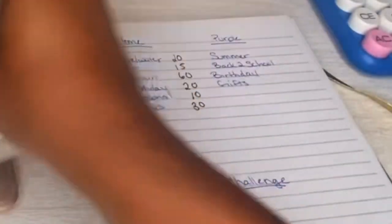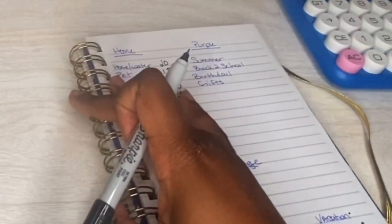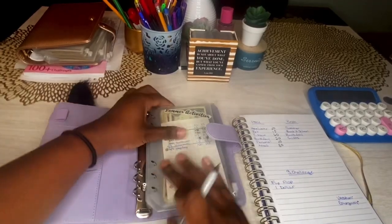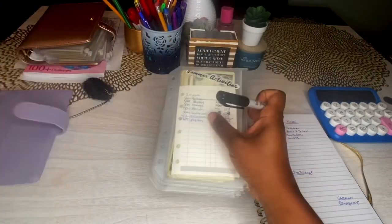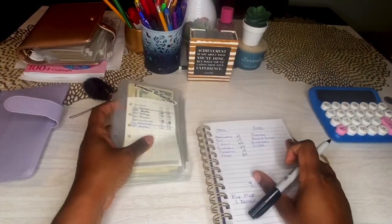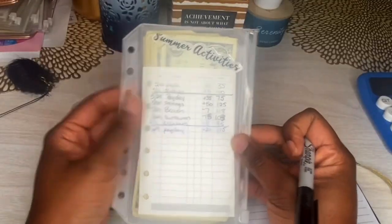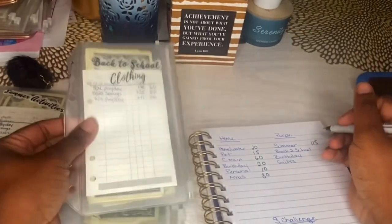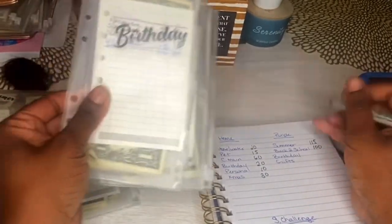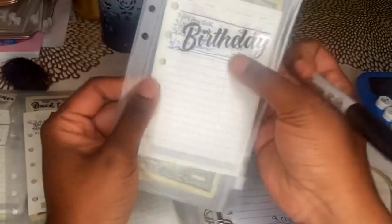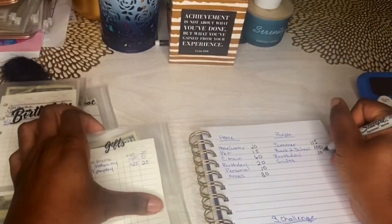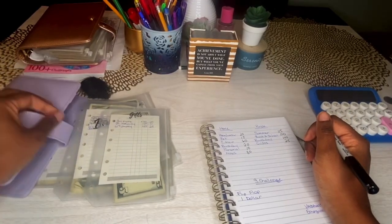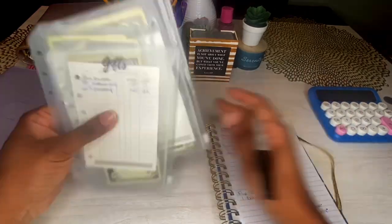I'm going to put these back in order later. This is just something quick I wanted to calculate for myself and for you guys. Give you some motivation, let you see even on low income, even as a single parent, if you have trouble saving, this is helping so much. Okay, and only just a short amount of time. One hundred fifteen is in summer activities. Back to school has one hundred. Birthday has one hundred, and gifts has twenty-five.